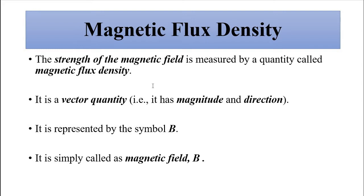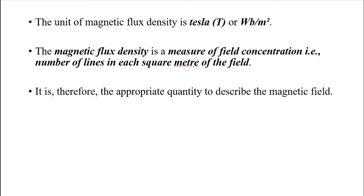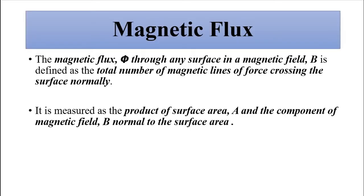Magnetic flux density: the strength of a magnetic field is measured by a quantity called magnetic flux density. It is a vector quantity, meaning it has both magnitude and direction, and it is represented by the symbol B — mostly used in vector form with an arrowhead above it. It is also simply called the magnetic field. The unit of magnetic flux density is Tesla or Weber per meter squared. It is a measure of the concentration — the number of magnetic lines of force per unit area.